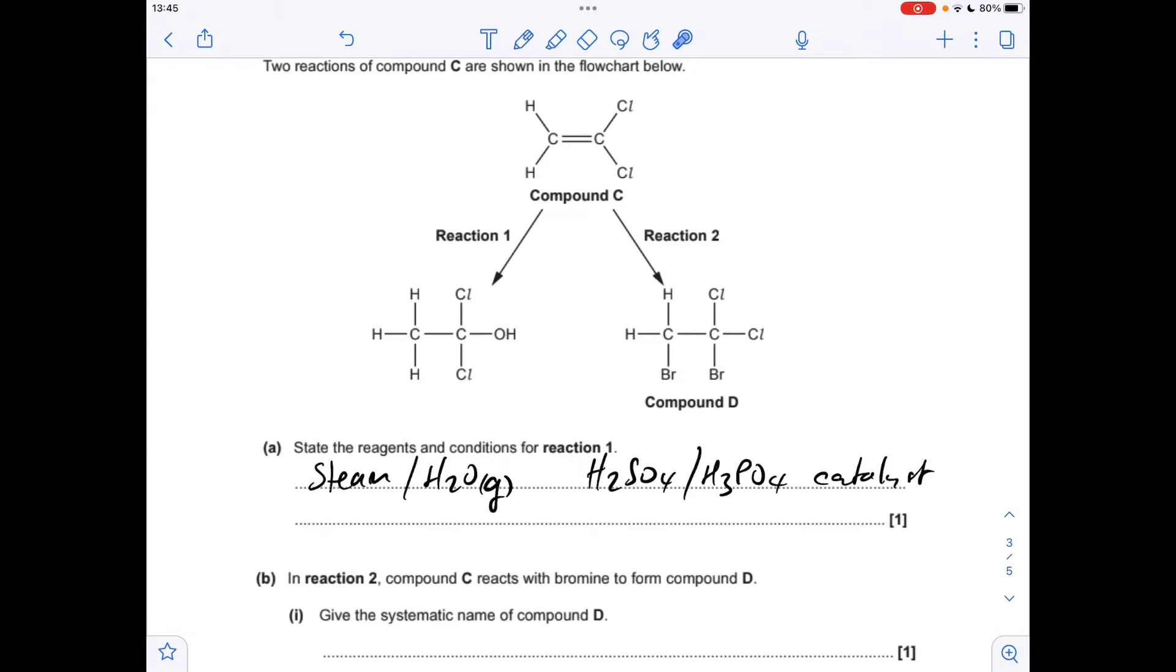Moving on to the name for compound D now. So it's going to be based on ethane because we've got two carbons. It's going to be a dibromo. It's going to be a dichloro. And the dibromo is going to come before the dichloro because of the alphabet rule.